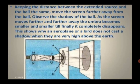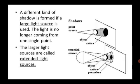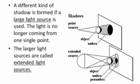A different kind of shadow is formed if a large light source is used. The light is no longer coming from one single point. The larger light sources are called extended light sources. A point source of light is obtained by placing a screen having a fine hole in front of a luminous body.